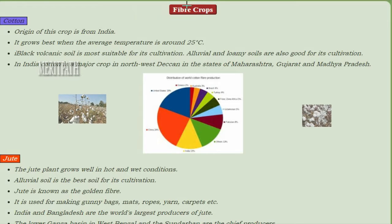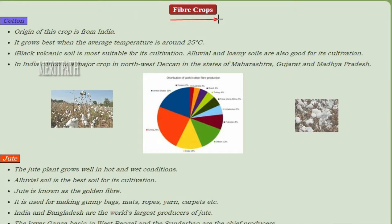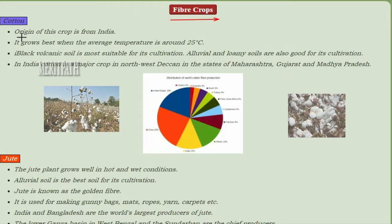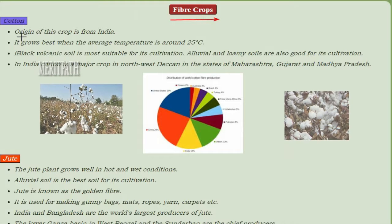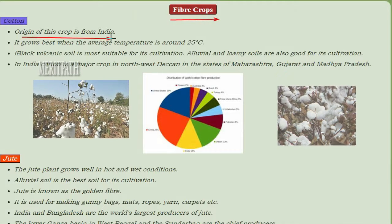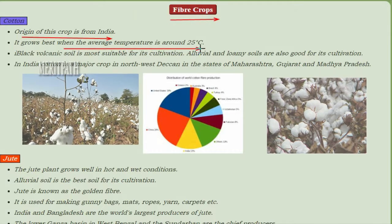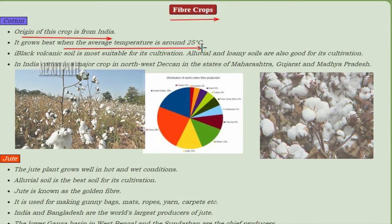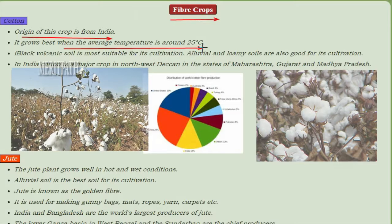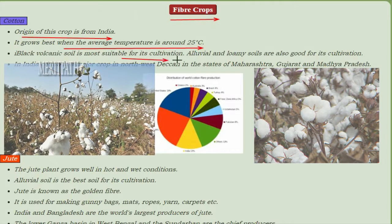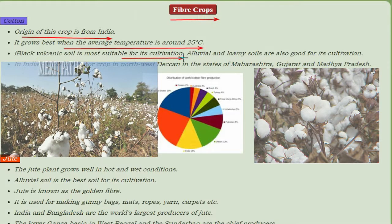Coming to the next type of crop — fiber crops. Cotton: the origin of this crop is from India. It grows best when the average temperature is around 25 degrees centigrade. Black volcanic soil is most suitable for this type of cultivation. In India, cotton is mainly grown in the regions of the Chotanagpur Plateau and Deccan Plateau.